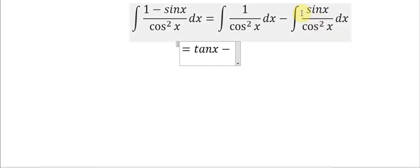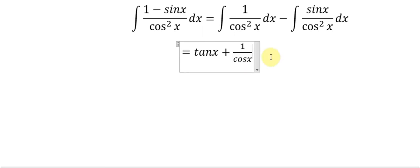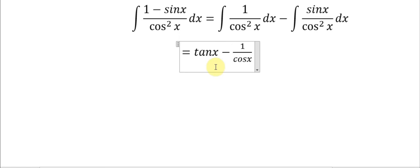We have tan and we have minus sin(s) divided by cos²(s), and this one will become minus 1 divided by cos(s) times 1 divided by cos(s). So we change back to get the minus, and here is the answer for the question.